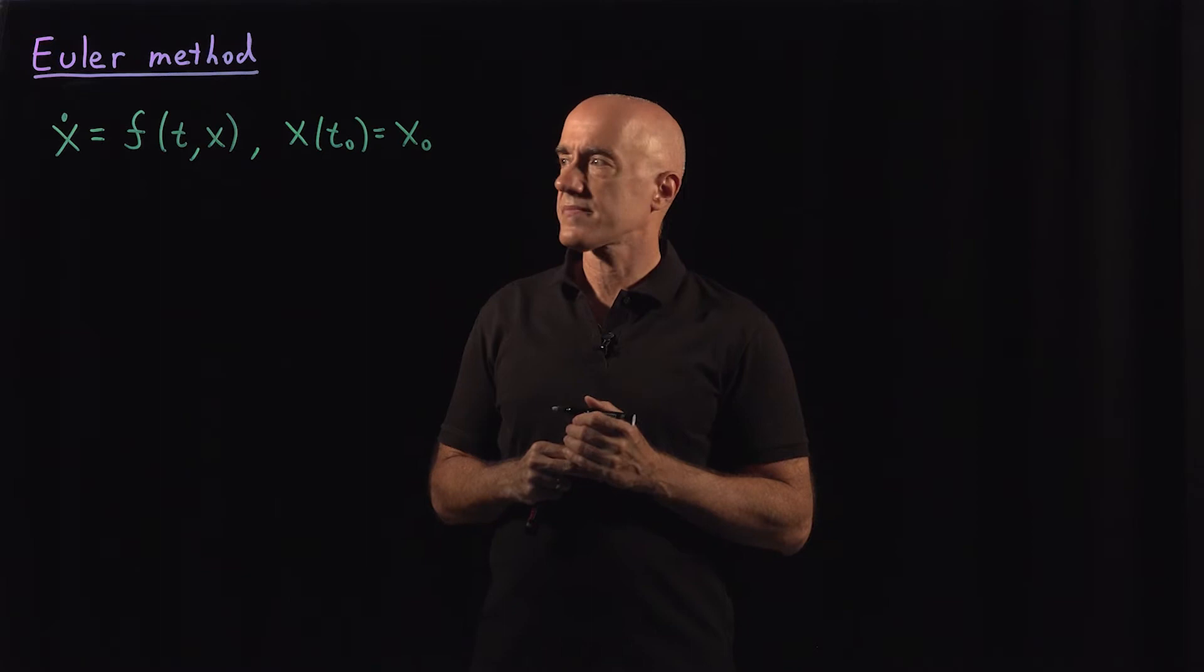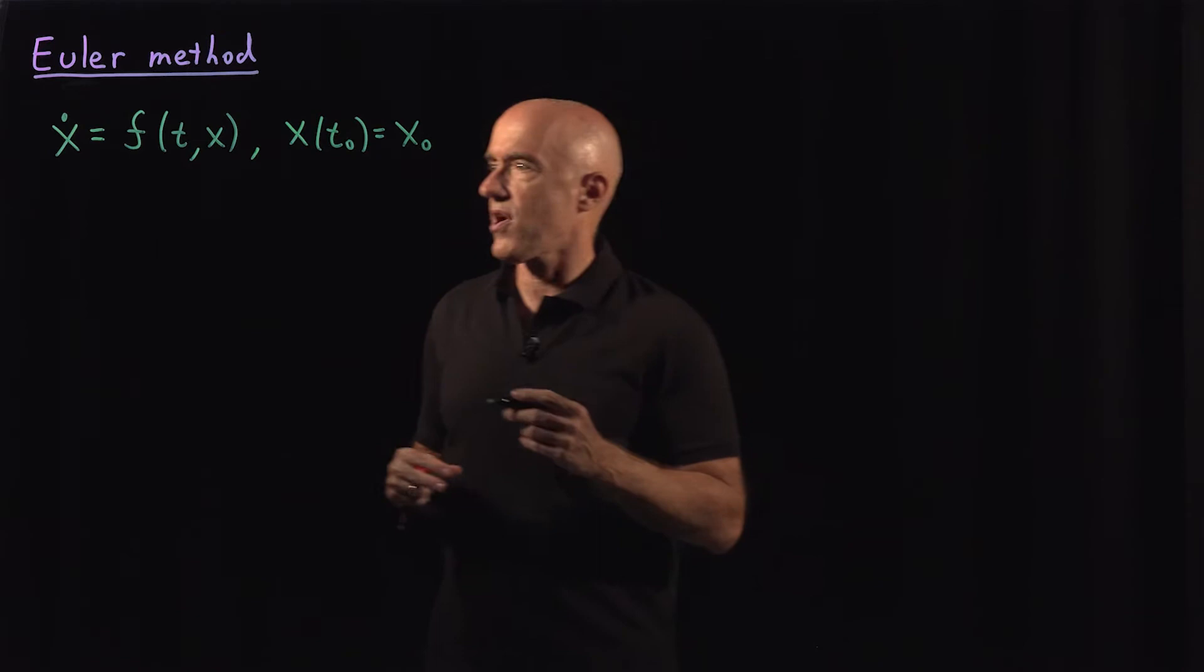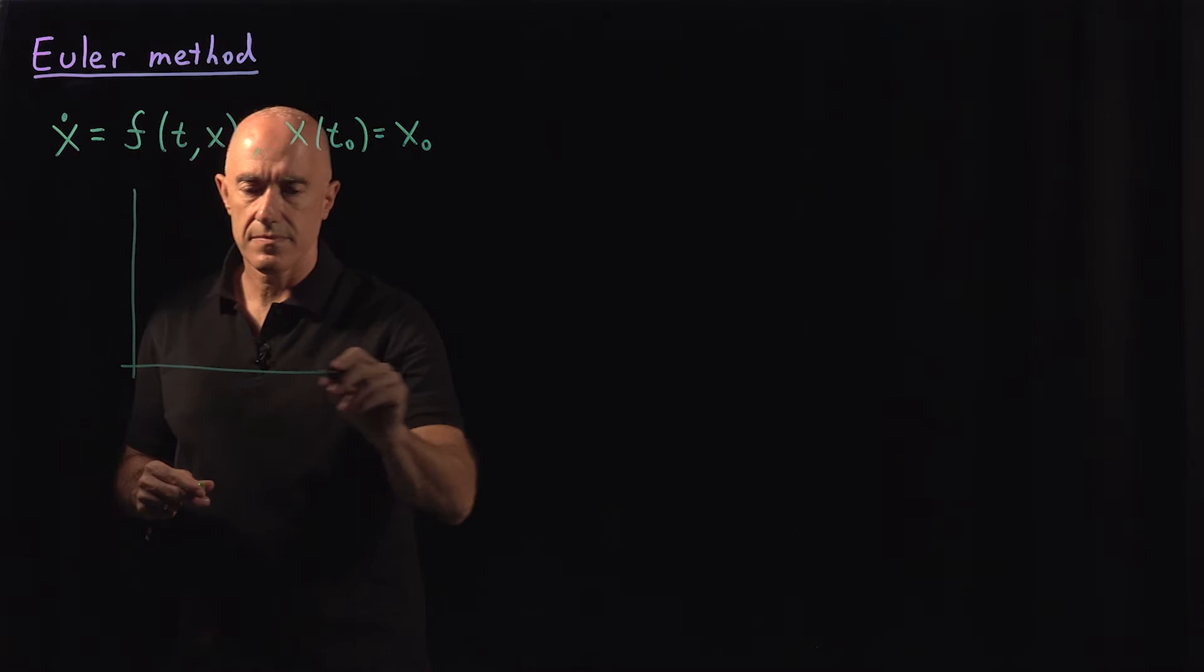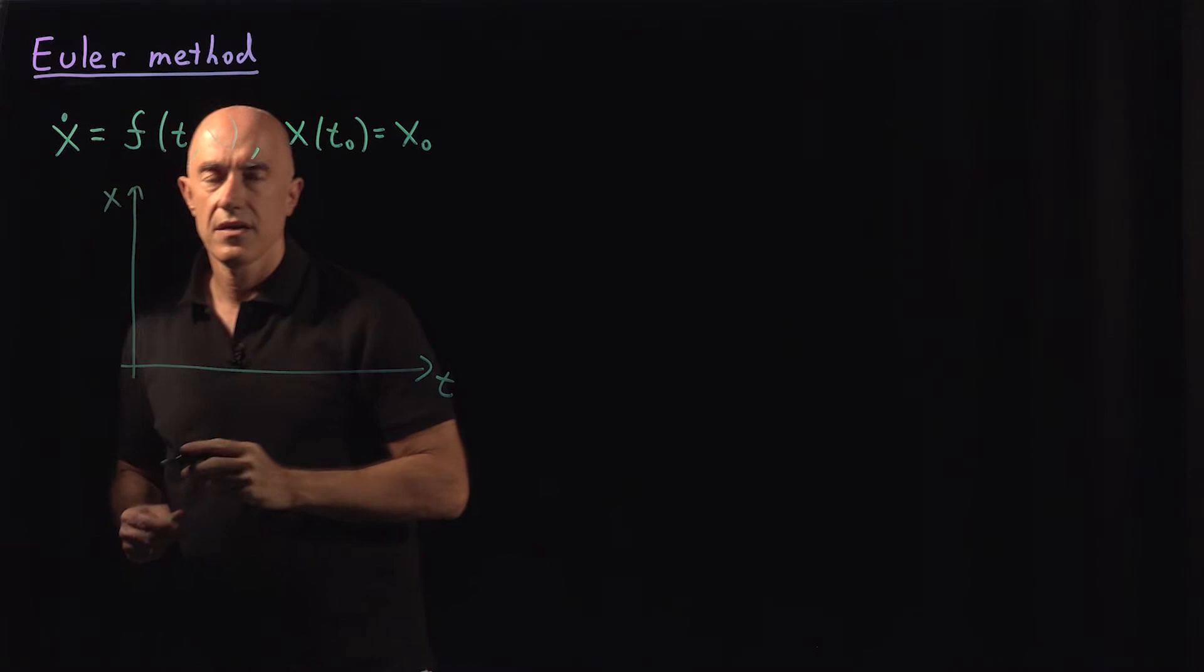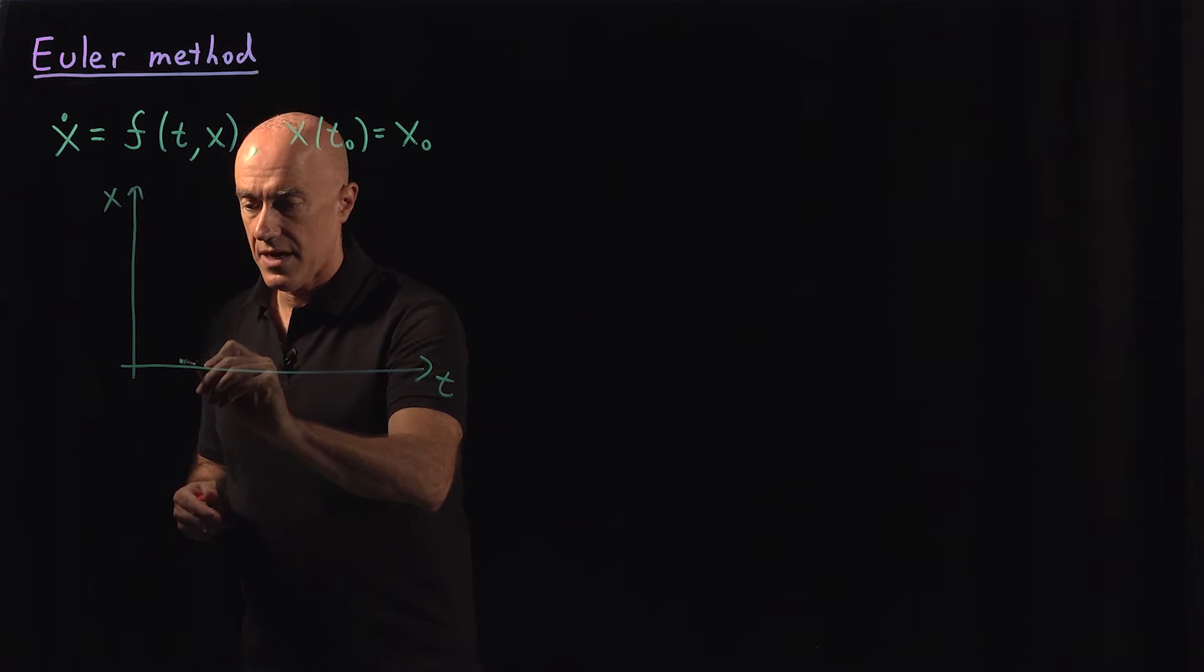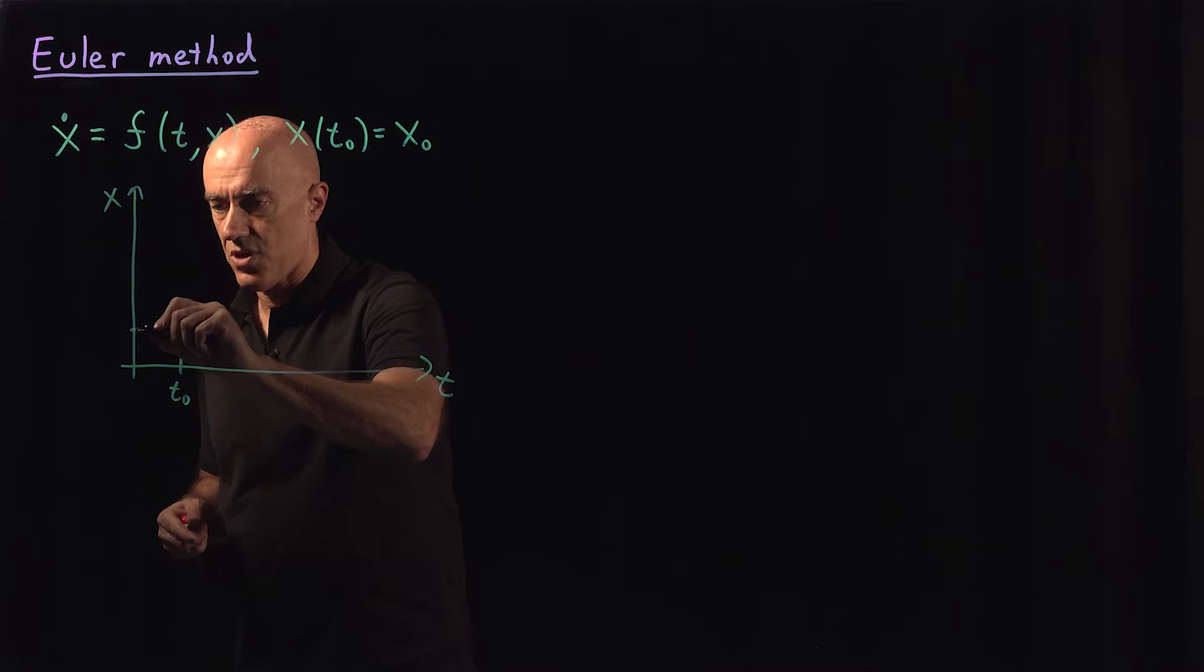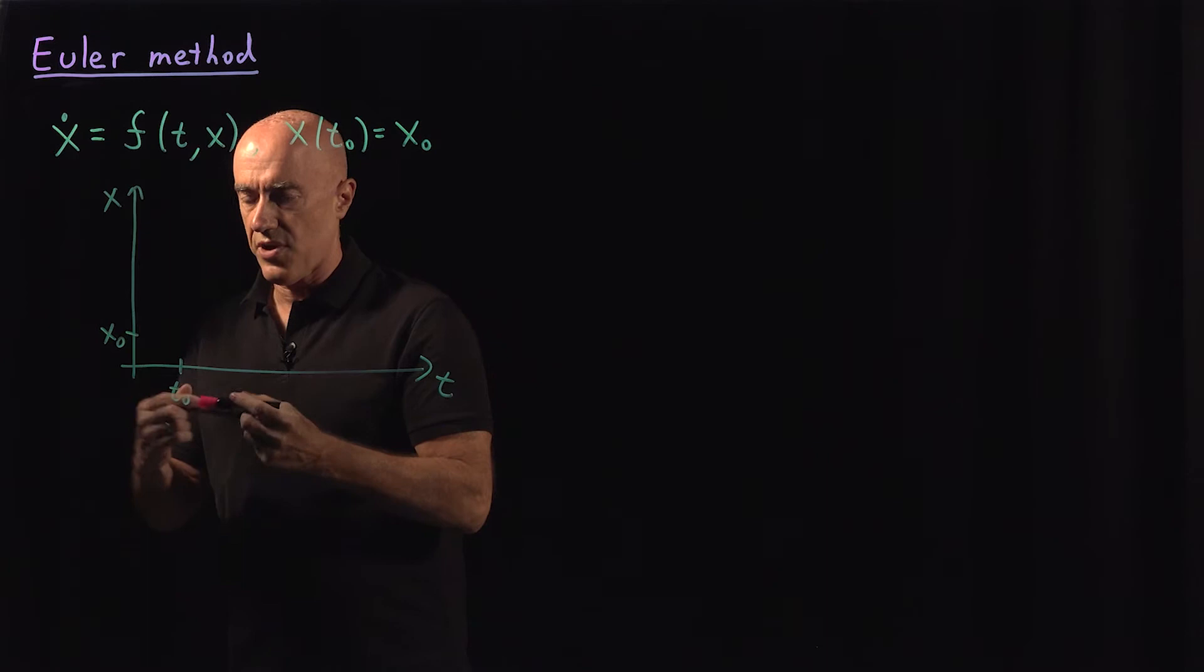To see how the Euler method works, it's easiest to draw a graph. So we can draw our solution. Say this is t and this is x. We know the initial condition, so we know that at t naught the function takes the value of x naught. I can put it here, x naught. So we know this point on the graph from the initial condition.